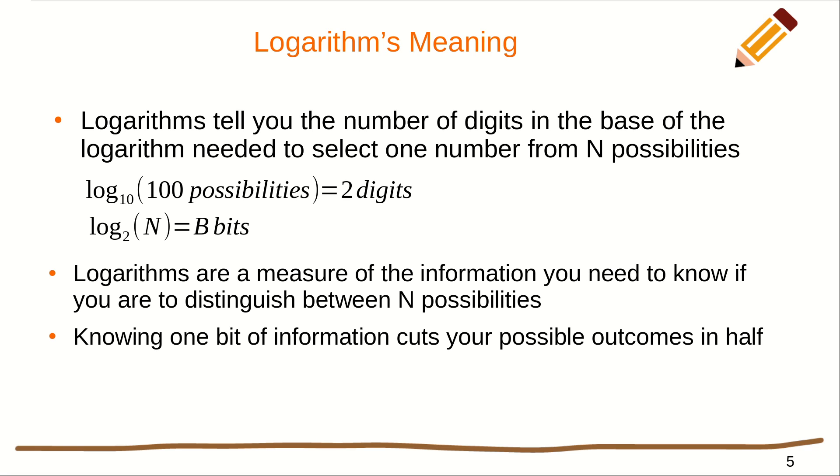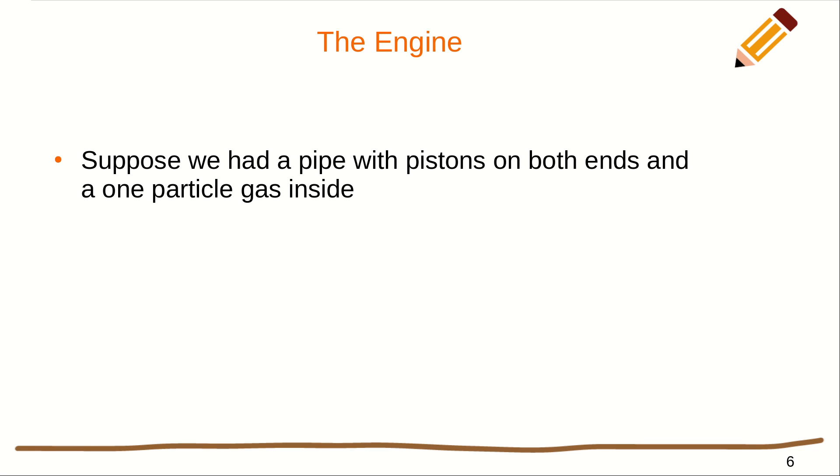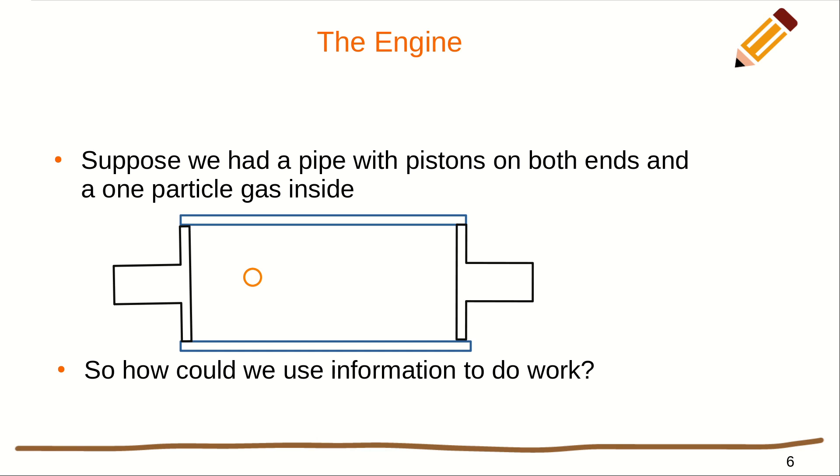Knowing one bit of information cuts your possible outcomes in half. So, let's think about the engine now. Suppose we had a pipe with pistons on both ends and one particle of gas inside. Here's a picture. How could we use the information, or some kind of information, to do work on this?